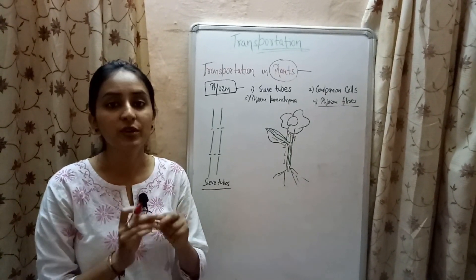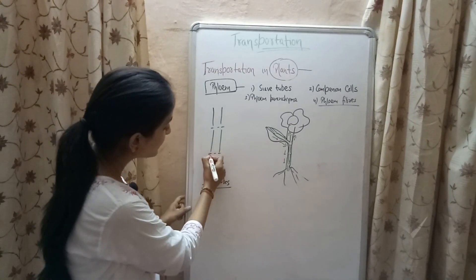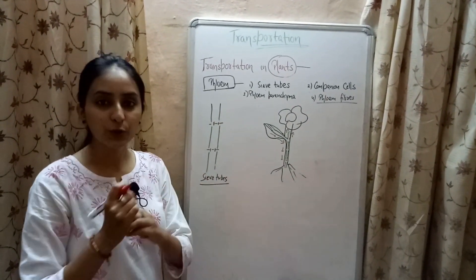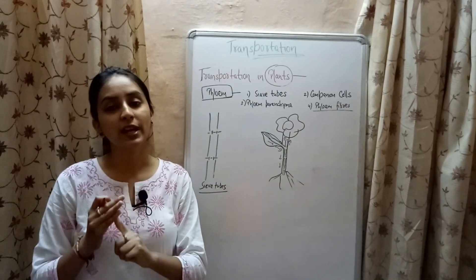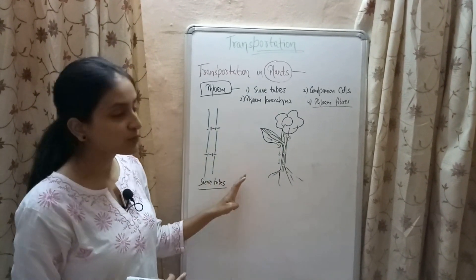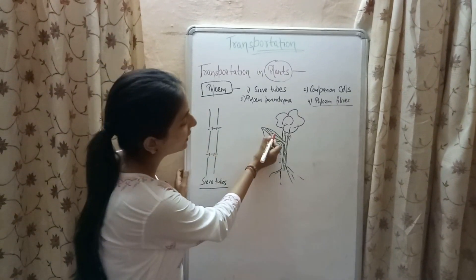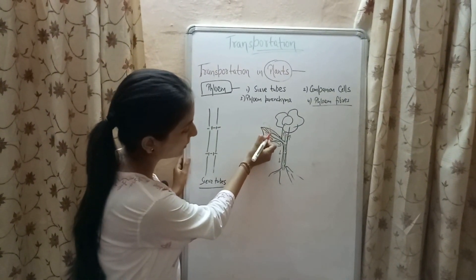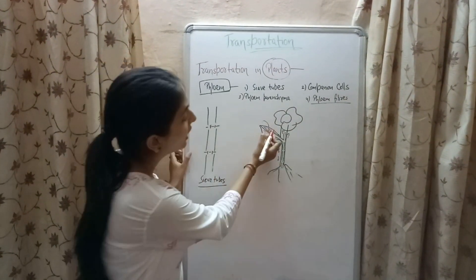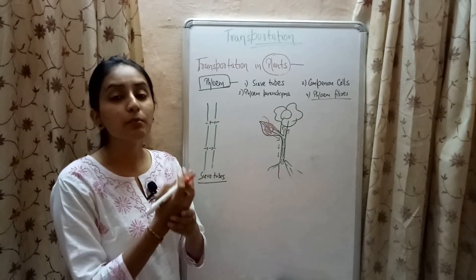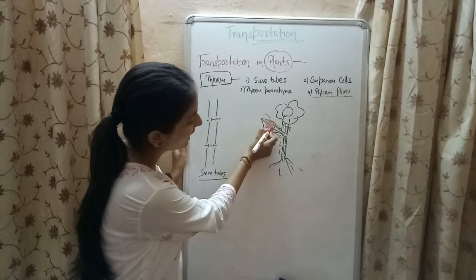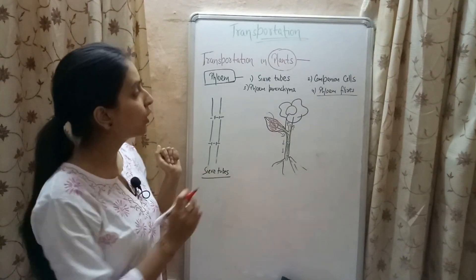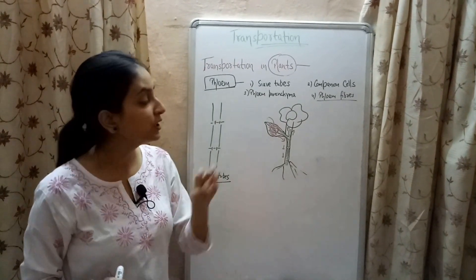Sieve tubes are the conducting channels of phloem, helping in conduction of food in plants. The ends of the sieve tubes are partially open with small pores that allow transportation of food from one part of the plant to another. Unlike xylem, sieve tubes transport food in both upward and downward directions. Food, in the form of sugar, is prepared in the leaf region and then loaded into the sieve tubes of phloem. Water also enters the sieve tubes, increasing the pressure inside, and since materials move from high pressure to low pressure, food moves to all regions where there is less pressure or a requirement for food.